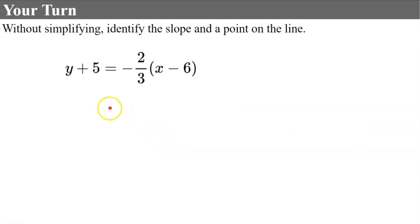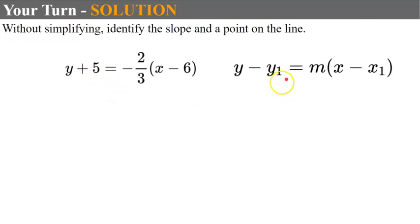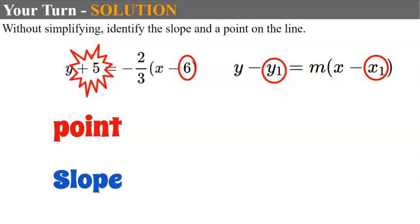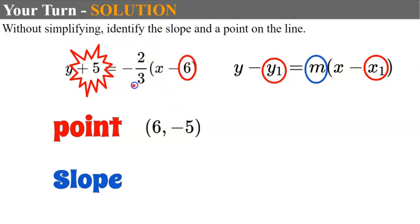Without simplifying, identify the slope and a point on the line from the given equation. Compare it to point slope form. The x coordinate is positive 6, and since the y side shows 'add 5,' the y coordinate is negative 5. So the point is (6, negative 5). The slope is the m value — negative two-thirds.